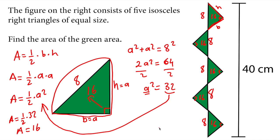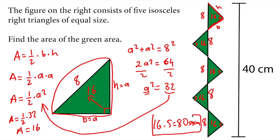So the total answer will be 16 × 5 = 80 square centimeters. This is our answer to this question.